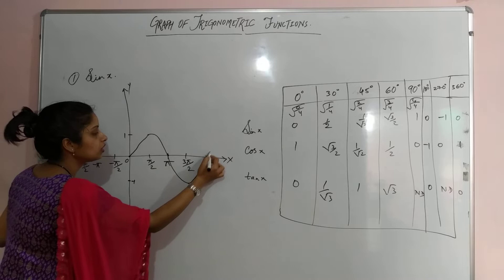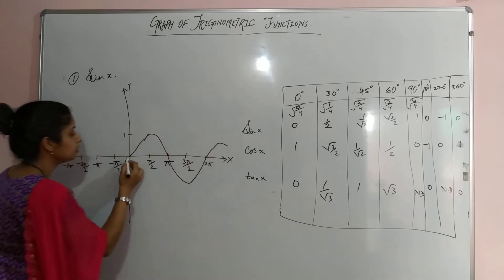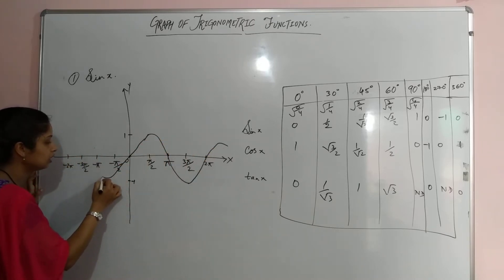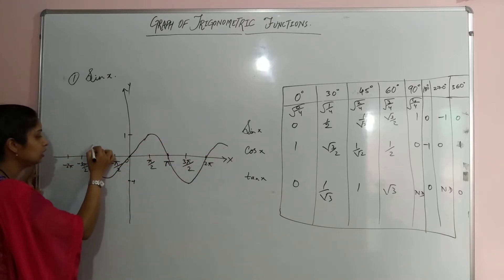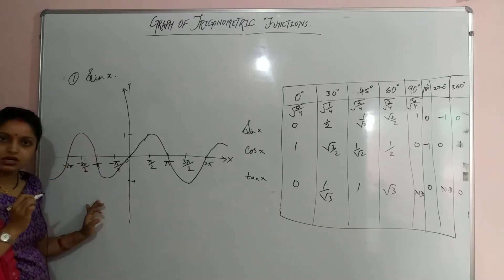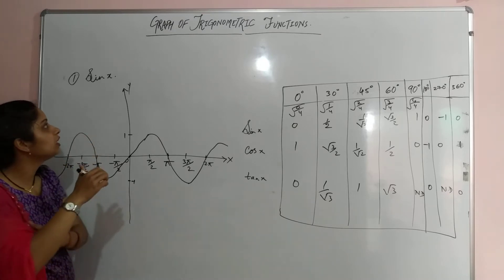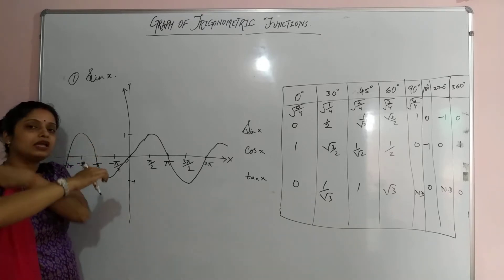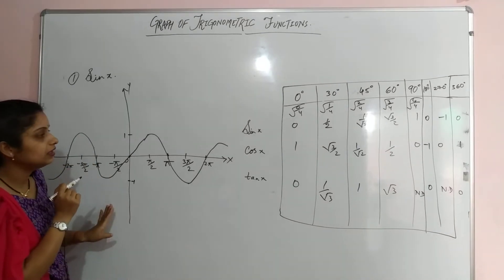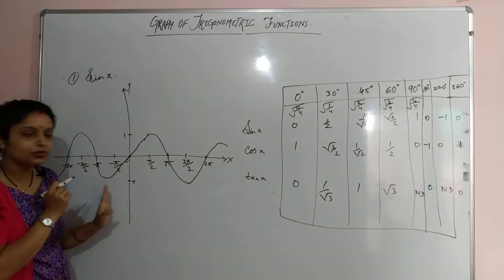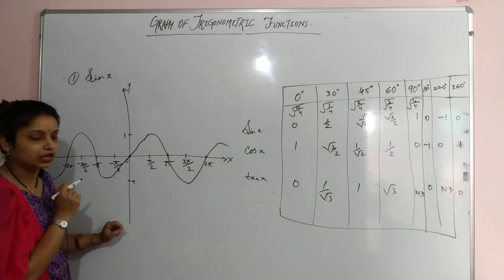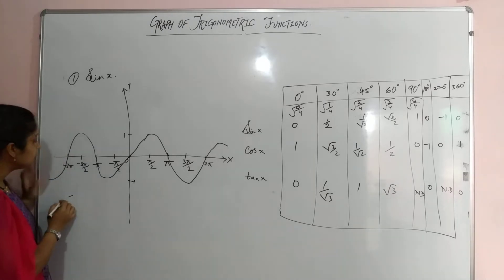This curve is symmetric along the negative axis as well. So this complete curve represents the graph of sine x. I think it is clear to you — this is how you draw a graph of sine x.